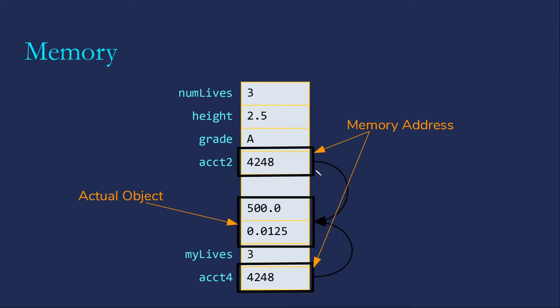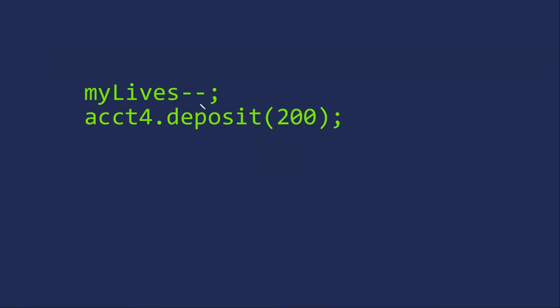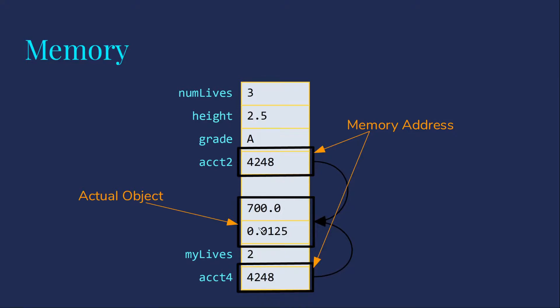Both of these point to the same object. If I modify myLives and modify account4 by depositing $200 into the account, I'm going to see that myLives changed, numLives did not because it was just a copy of the value. But the actual object that's pointed at by both account2 and account4 was modified because these are just references for the actual object.